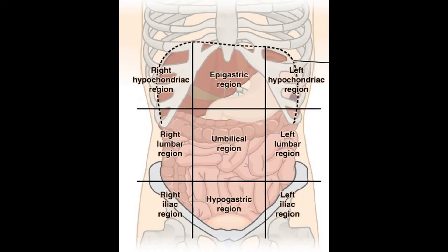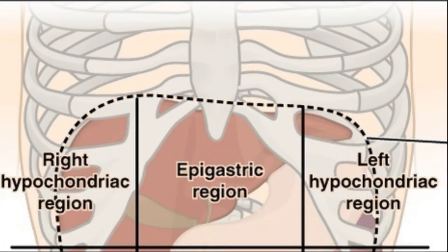Now let's look at the contents by region. In the right hypochondriac region you've got the liver, gallbladder, and right kidney. In the epigastric region you've got the stomach, part of the liver, the pancreas, and the right and left kidneys. In the left hypochondriac you've got the stomach, the tip of the liver, the left kidney, and the spleen.